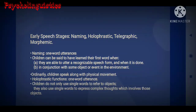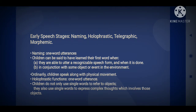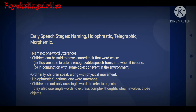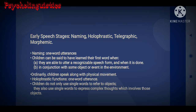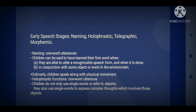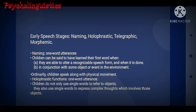There are kinds of early speech stages: naming, holophrastic, telegraphic, and morphemic. Naming refers to one-word utterances. Children can be said to have learned their first word when they are able to utter a recognized speech form in conjunction with some object or event in the environment. Ordinarily, children speak aloud with physical movement.